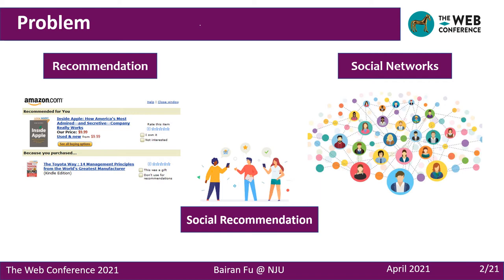Moreover, along with the increasing popularity of social networking platforms, Social Recommendation, which incorporates social relations into recommender systems, has been developed and shows promising potential to improve recommendation performance. Social relations among users can provide friends' information for modeling user preference better and also provide more possible perspectives for items' exposure to relevant users.